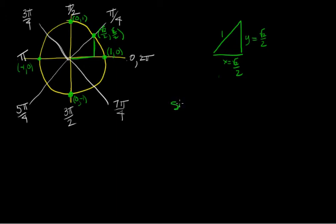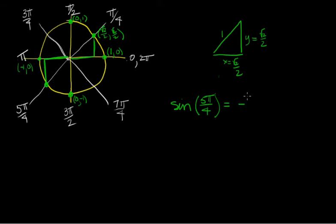Let's find the sine of 5 pi over 4. I just count around: 1, 2, 3, 4 — here's 5 pi over 4. I just need the y-coordinate of that point. If I drop a perpendicular to the x-axis, all odd multiples of pi over 4 give me 45-45 triangles, so sine and cosine are plus or minus the square root of 2 over 2. The y-coordinate in quadrant 3 is negative, so the sine of 5 pi over 4 is minus the square root of 2 over 2.